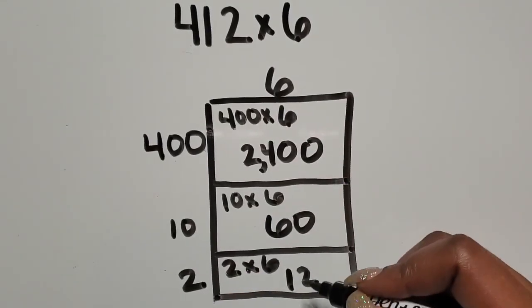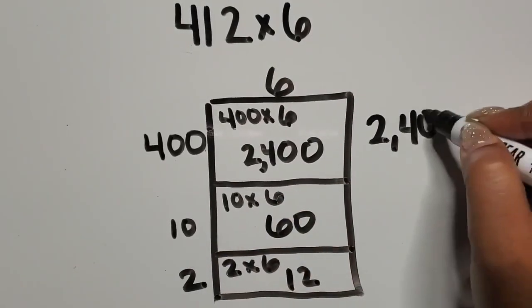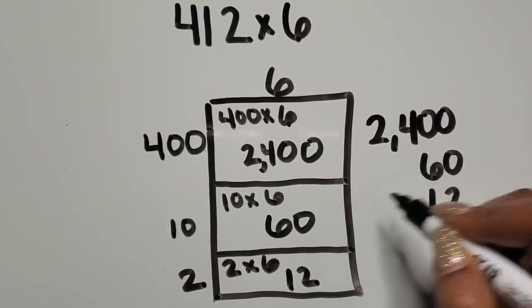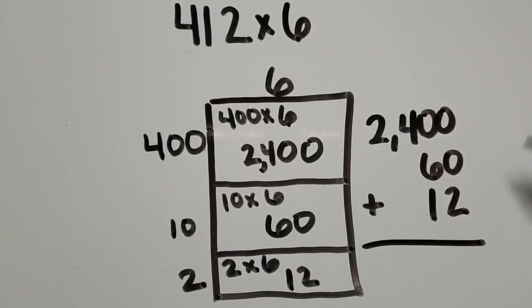I have part of the product, so I'm going to need to join them together by adding. So I'm going to rewrite them and line them up based on their place value, and then I would want students to add them together here.